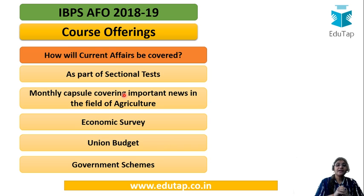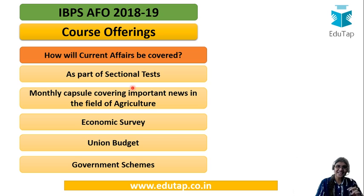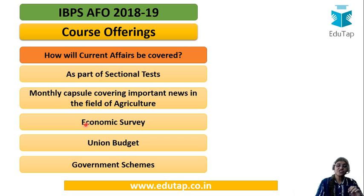Current affairs is also one important component. As part of the sectional tests, a few of the tests are going to be devoted to current affairs, so you can solve those tests and automatically cover the important news items regarding agriculture. Apart from that, we are also providing a monthly capsule which gives news items related to agriculture in detail. We shall also be providing the economic survey and union budget from the perspective of agriculture, with MCQs to practice.